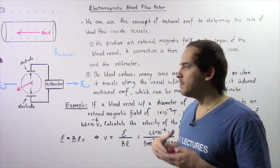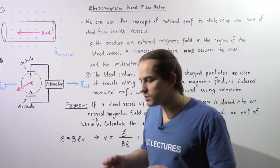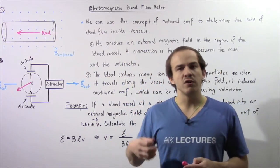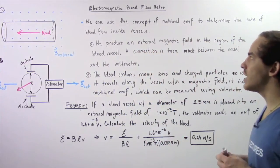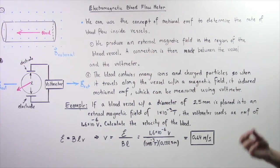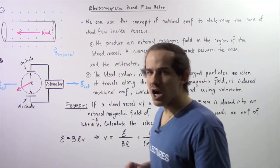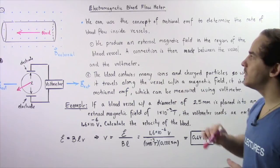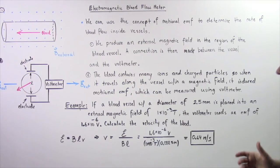This concept can be applied in medicine. Doctors and physicians use Motional EMF to measure the rate of flow of blood within a blood vessel. This concept is known as the Electromagnetic Blood Flow Meter, and we use Motional EMF to determine the velocity of blood within a blood vessel.